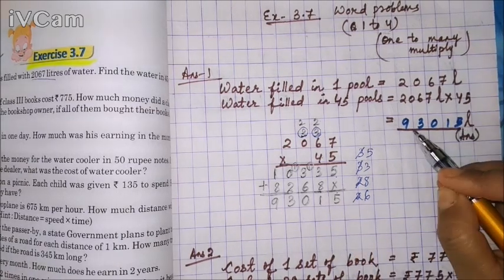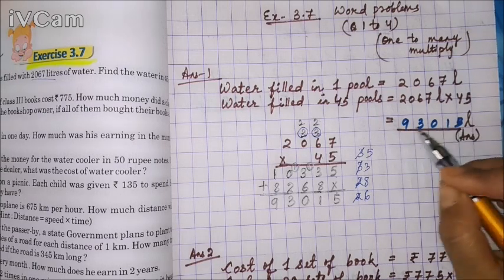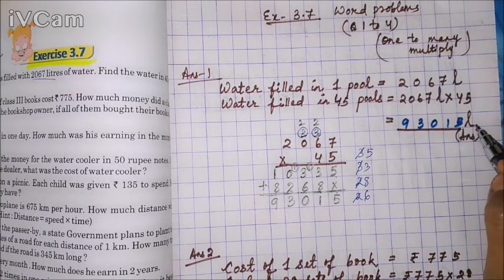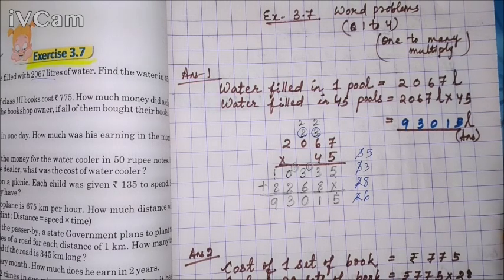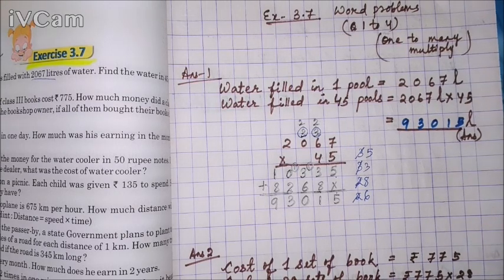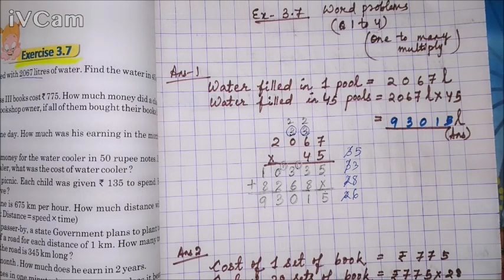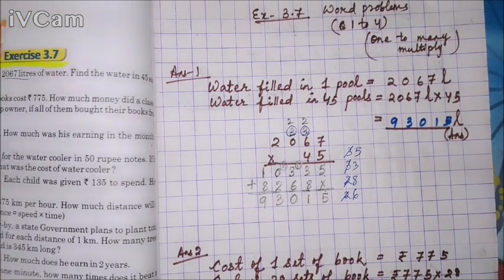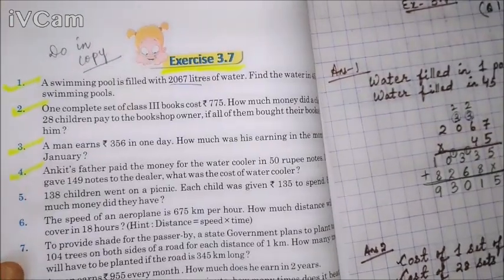After multiplying and adding, we got 93,015. Write the answer: water filled in 45 pools = 93,015 liters. Always write the unit L for liter.